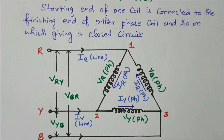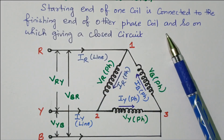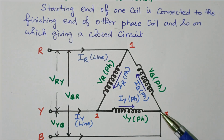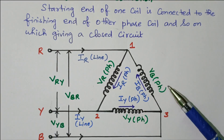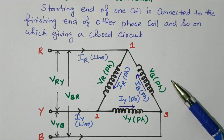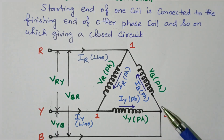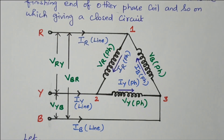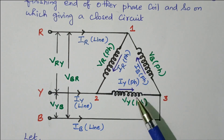Now we go to the delta connection. In delta connection, the starting end of one coil is connected to the finishing end of another coil, and so on, which gives a closed circuit. The coils are connected end to end to form a closed circuit. Then tappings for R, Y, and B are taken from each phase.